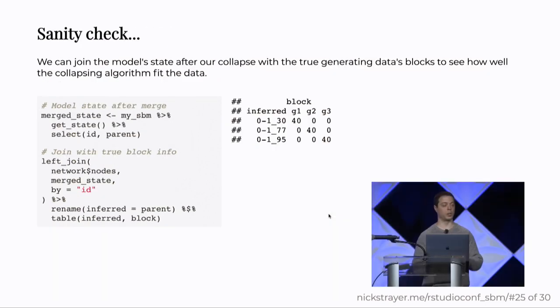And so we can do a sanity check because we know what actually generated the data. So conveniently we actually perfectly separated our clusters. This is the simulated block of the node and this is the inferred block. And so what we see is that every single inferred block perfectly corresponds to the data generating block. And this algorithm honestly works incredibly well. You could really if you wanted to just do all of your inference in this model without going to the Bayesian values and you'd do pretty well.